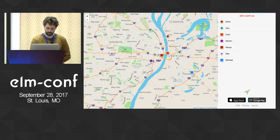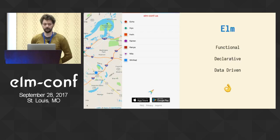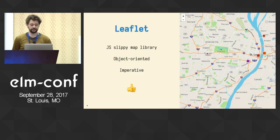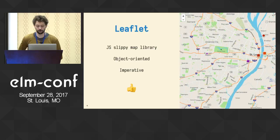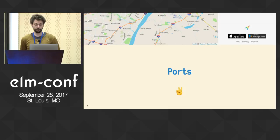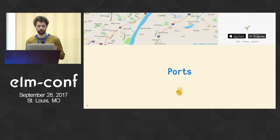Elm is this functional declarative data-driven language, and I think we all like it — it's cool. But this site also uses Leaflet, a JS-based slippy map library. It's object-oriented and imperative, but it's also cool — you can use it to create slippy maps.